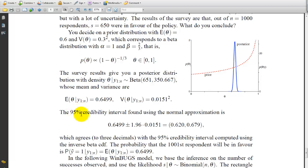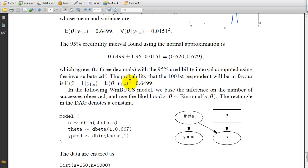The 95% credibility interval found using the normal approximation is 0.6499 plus or minus 1.96 times 0.0151 equals the interval 0.620, 0.679, which agrees to 3 decimals with the 95% credibility interval computed using the inverse beta CDF cumulative distribution function. The probability that the 1,001st respondent will be in favor is given here.